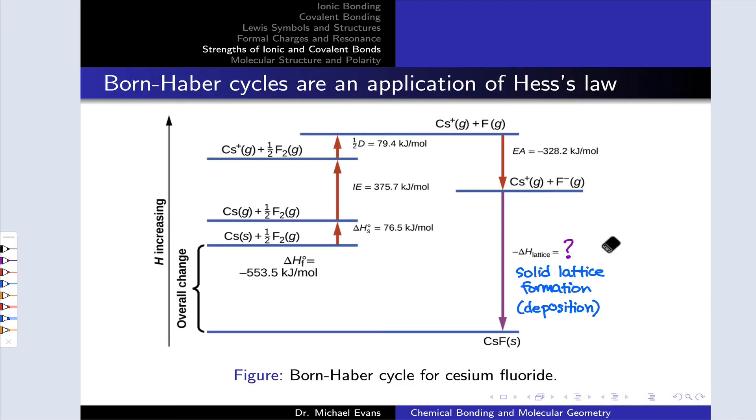Lattice energies are so endothermic that they're very difficult and typically impossible to measure directly. However, we can measure lattice energies indirectly by taking advantage of Hess's law and using a set of processes that ultimately adds up to this lattice energy process of taking the solid ionic compound and breaking it up into its gaseous ions, and adding up all those enthalpy changes to get the lattice energy.